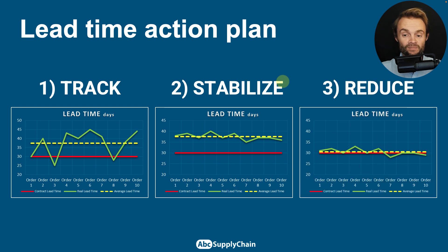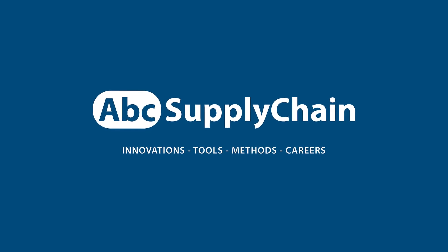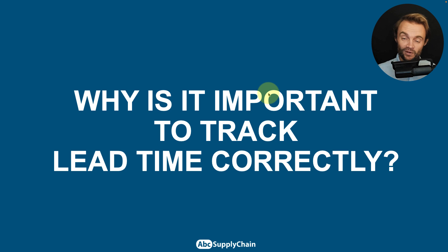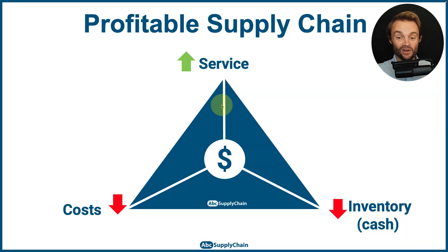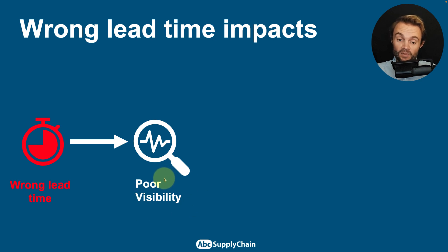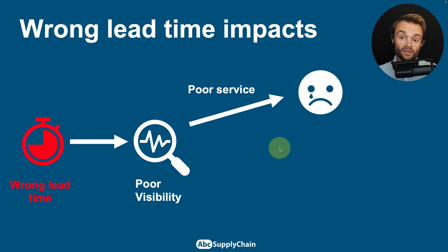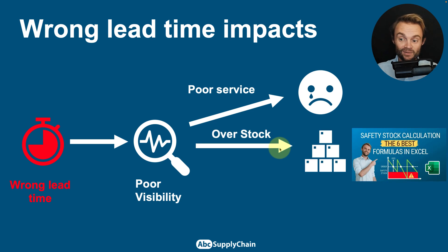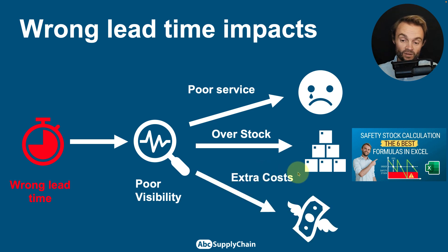Before going to Excel, why is it so important to track lead time correctly? It's very important to have a profitable supply chain if you want good service for your customers, minimize costs, and also reduce the inventory and cash you invest. If you track lead time incorrectly, the consequences will be poor visibility, poor service for customers, more inventory, extra costs to cover the lack of visibility, lack of service, and overstock in your supply chain.